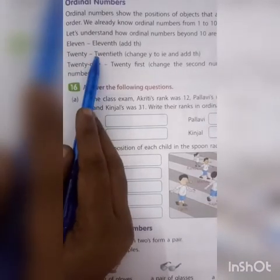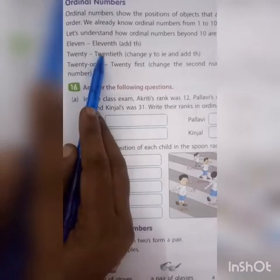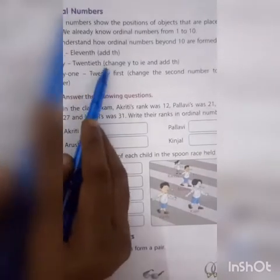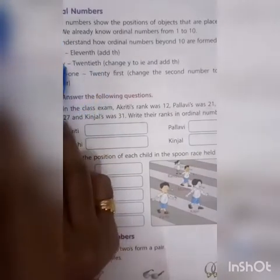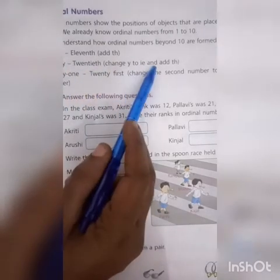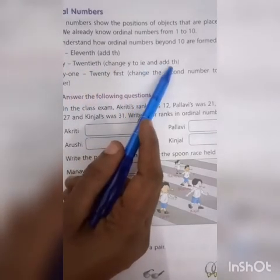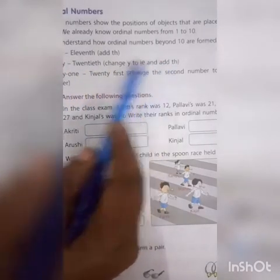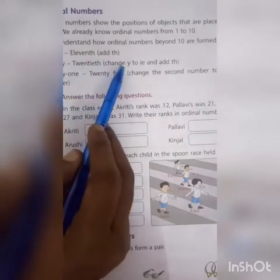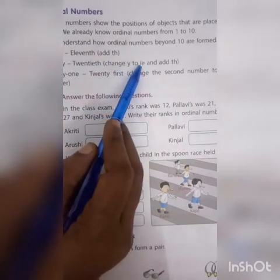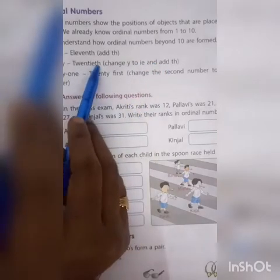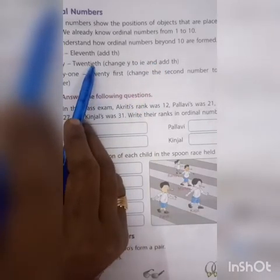Next is 20. 20th is spelled T-W-E-N-T-I-E-T-H. That is how you change it — the 'y' changes to 'ie' and you add 'th'. So 20th: change Y to IE and add TH.